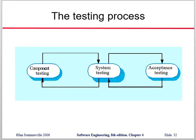In the testing process, first we have component testing, then system testing, and lastly acceptance testing. Components are the parts of the software; if the parts are okay then the whole system is tested, and if the system passes it is sent to the user or customer. If the customer accepts it, then acceptance testing is passed.